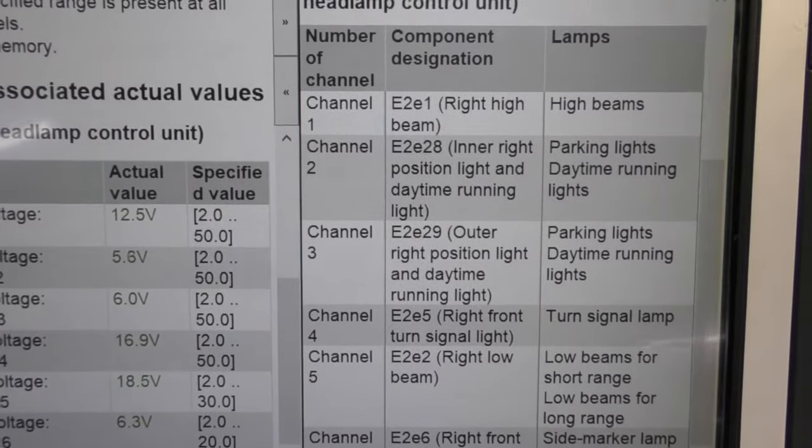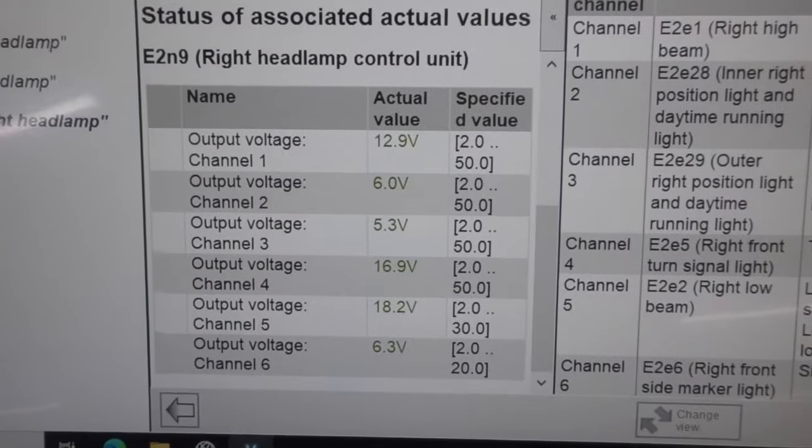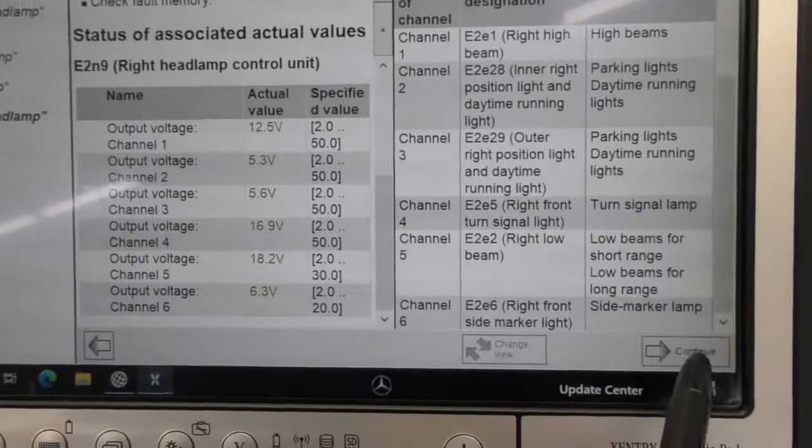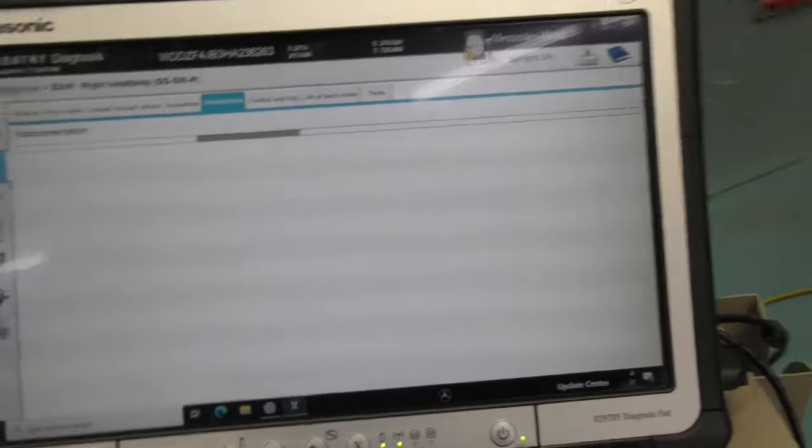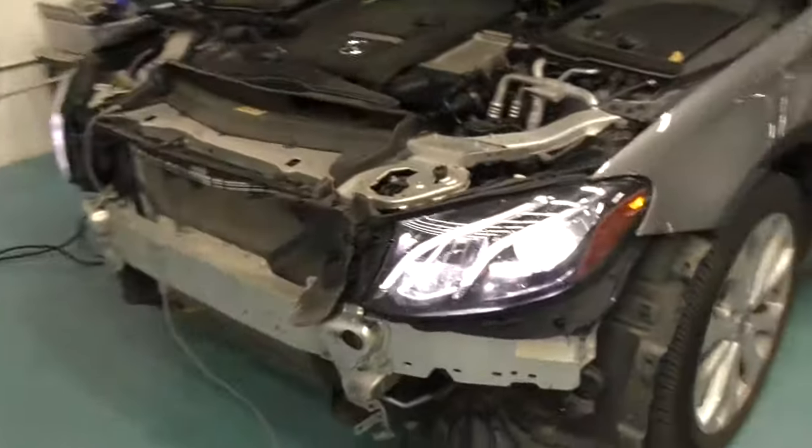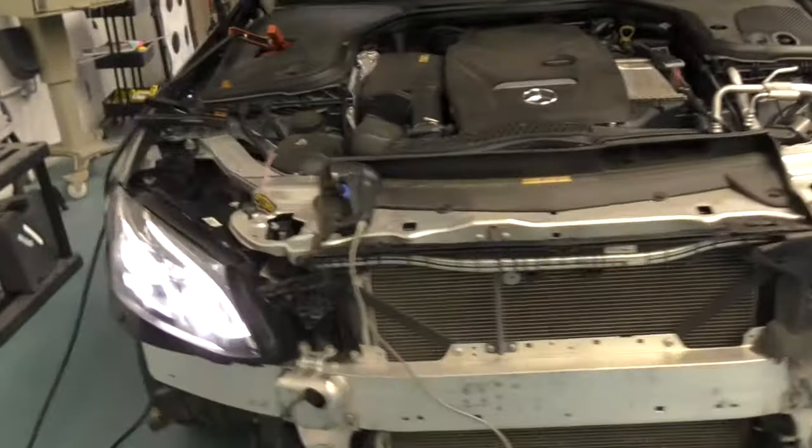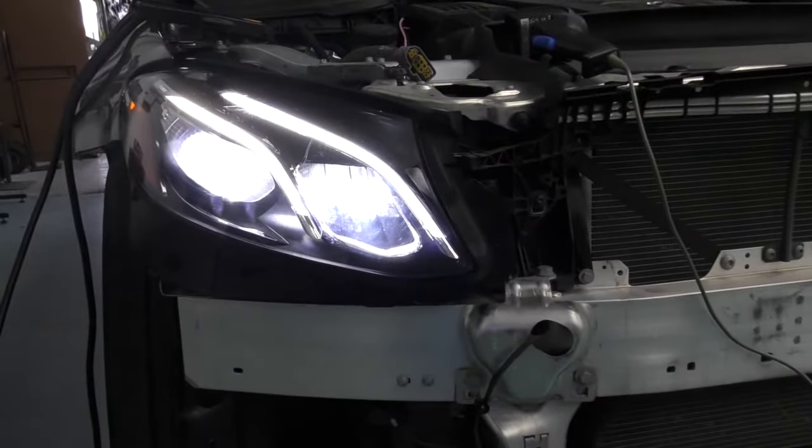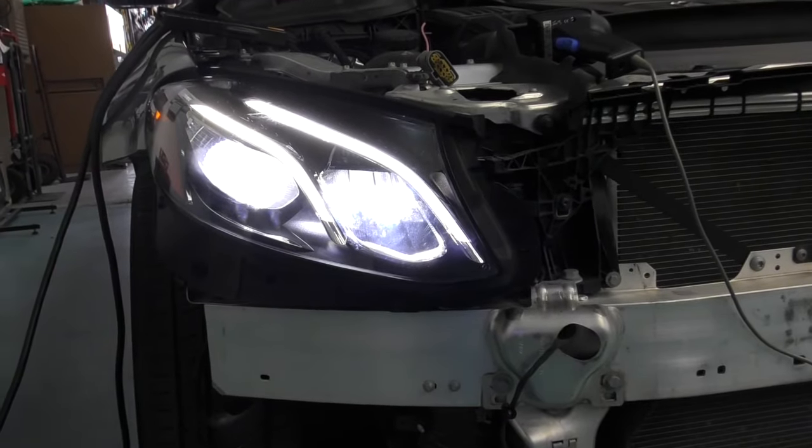Now we have a $2,500 headlight, a $300 module, and a $35,000 scan tool to program it all. Thank you for watching. Now the body shop can finish the repair and deliver the vehicle.